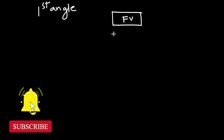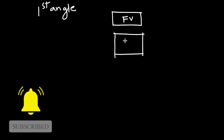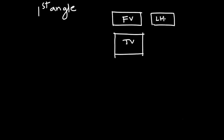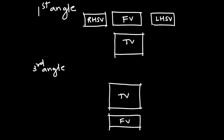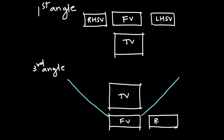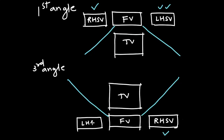So in first angle, we draw the front view; the top view goes exactly below the front view; the left hand side view goes on the right hand side; and the right hand side view goes on the left hand side. But in third angle, the top view goes above the front view. We take 45 degrees like this. In this case, the right hand side view comes on the right side, and the left hand side view comes on the left side. Thank you.